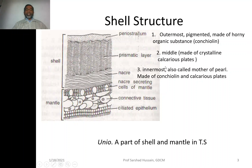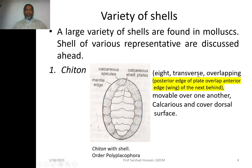Then comes the third layer, nacre, which is the innermost layer of the shell. It is also called mother of pearl, because pearl is found in the nacre region. It is also made up of conchiolin and calcareous plates. You may have varieties of shell in the molluscs, and a few of them are discussed here.